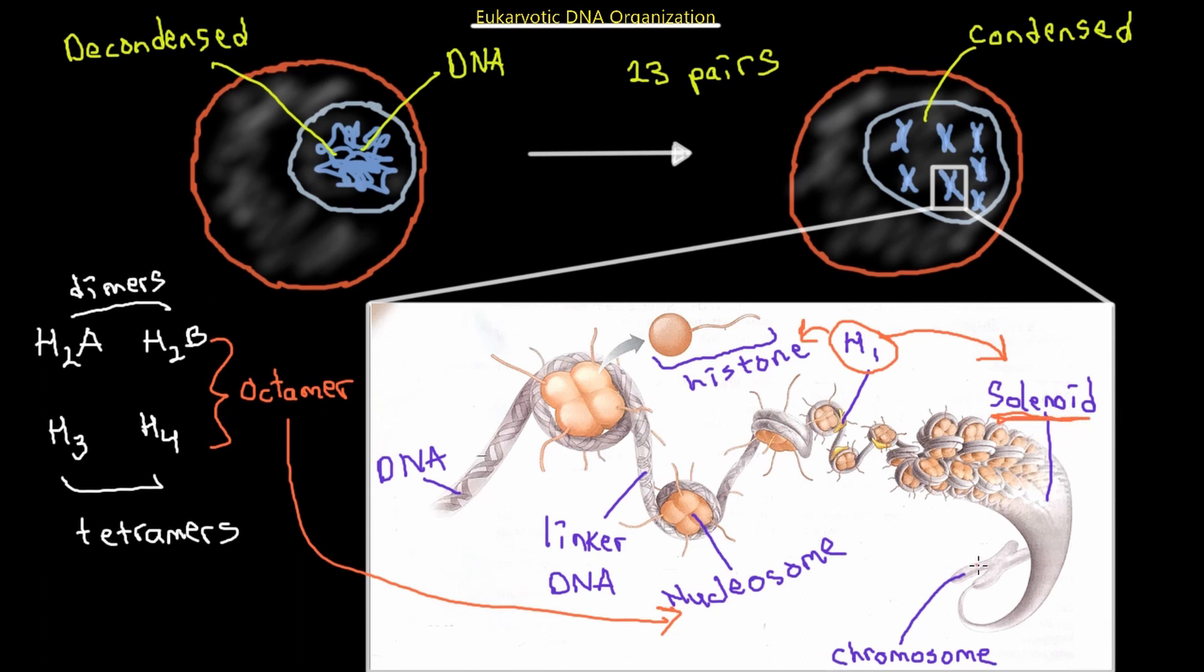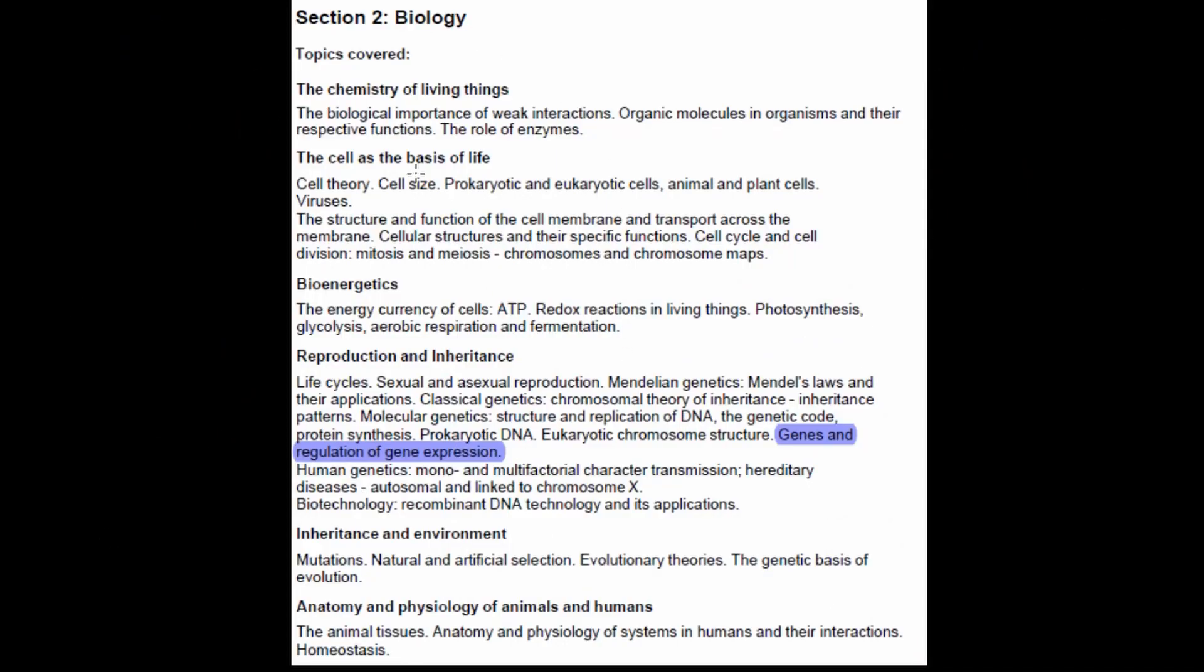And of course, once the solenoid is formed, it's going to make up the chromosome. This concludes our lecture on the DNA structure of prokaryotes and eukaryotes. In the next video, we're going to take a look at genes and the regulation of gene expression.